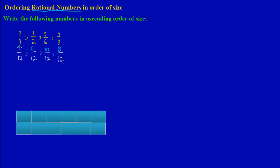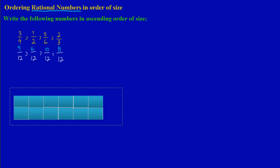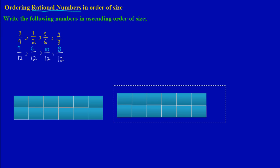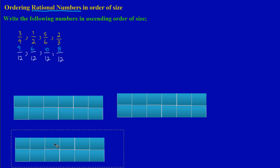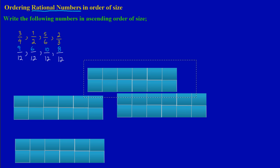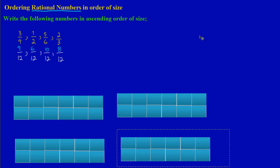I want to compare 9 over 12, 6 over 12, 10 over 12, and 8 over 12 to write them in ascending order. I'll use four fraction bars, and each fraction bar will be divided into twelve equal parts. So let me go ahead and draw those four bars now.